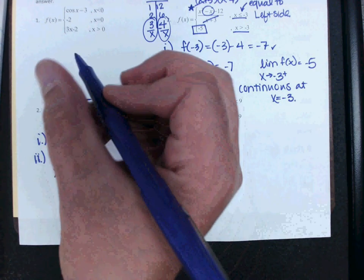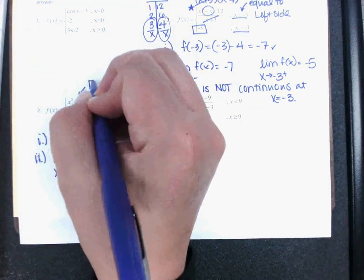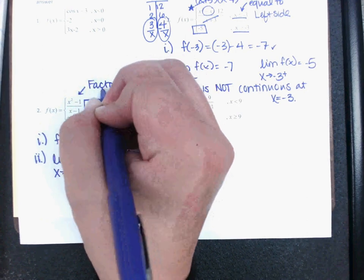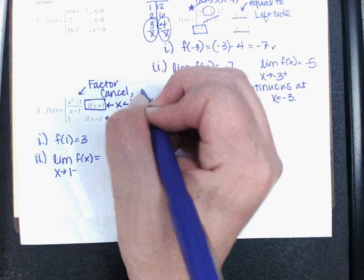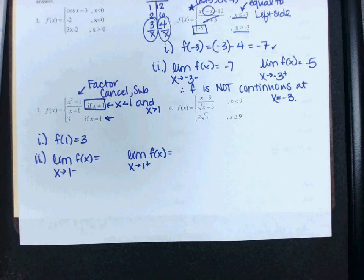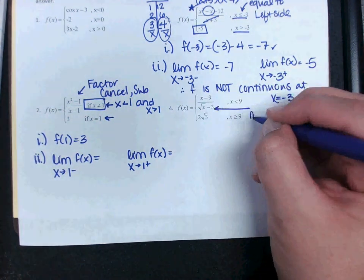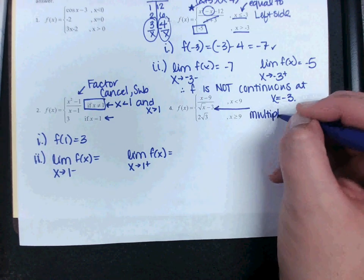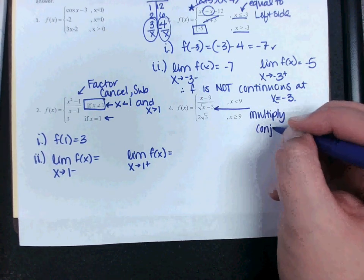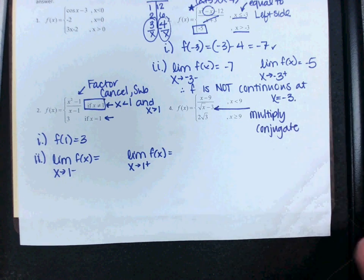Now, you are going to have to fix this, but you can factor cancel it. And then after you factor and cancel, then you'll substitute. Number 4, your hint is make sure you multiply by the conjugate there. And look back at yesterday's examples if you need help with that. Alright, turn the page over, please.